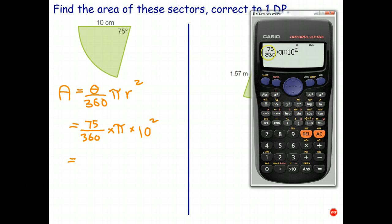And again I'm going to use my power button, in fact I can use my squared button, and I get 10 squared. So 75 over 360 times pi times 10 squared.